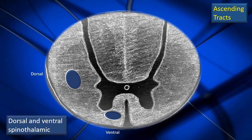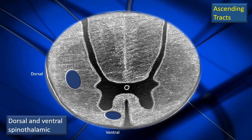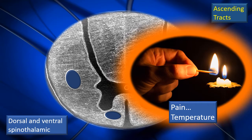The first tract we are covering is the dorsal and ventral spinothalamic tract. The dorsal spinothalamic tract is in the lateral funiculus. The ventral spinothalamic tract is in the anterior funiculus. This is important because it conveys sensations of pain and temperature upwards into the brainstem and beyond.